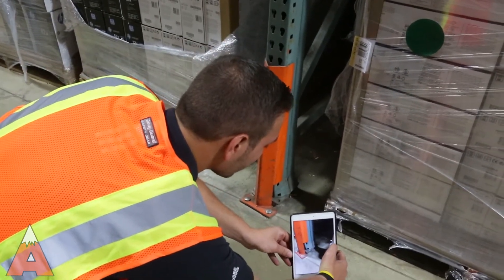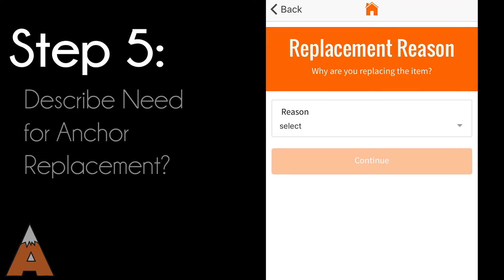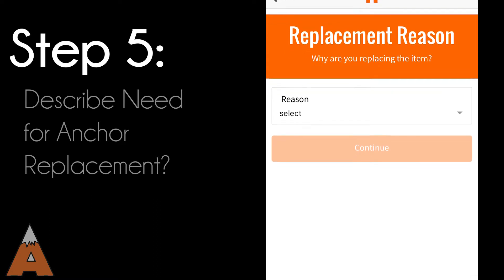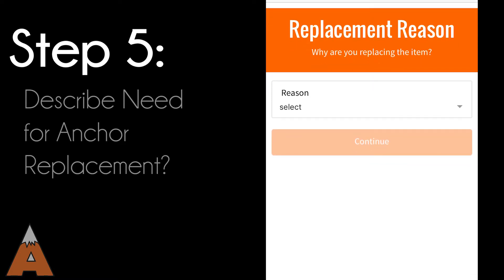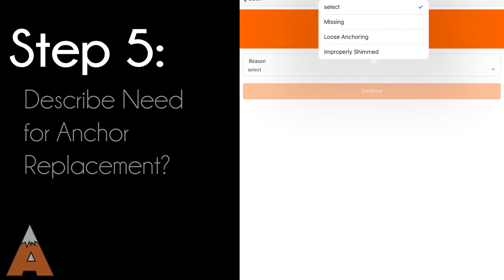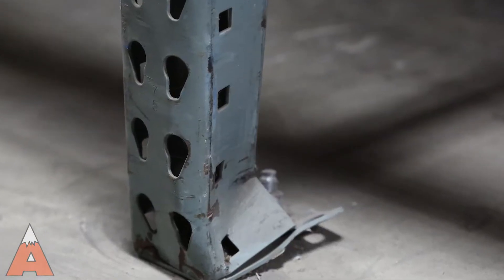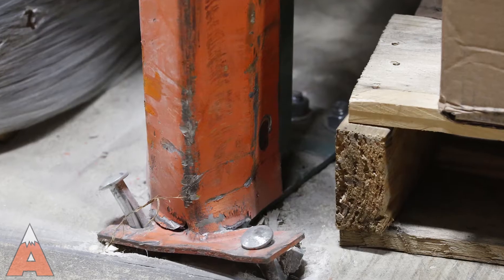Click Continue to submit. Now, select the reason why the anchor should be replaced. You can choose from: missing, loose anchoring, or improperly shimmed. Then hit Continue.